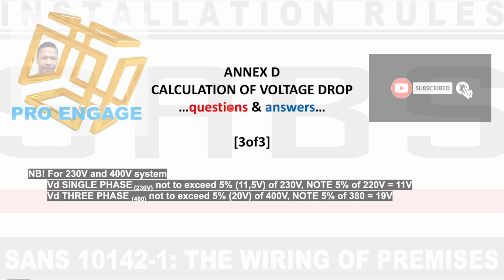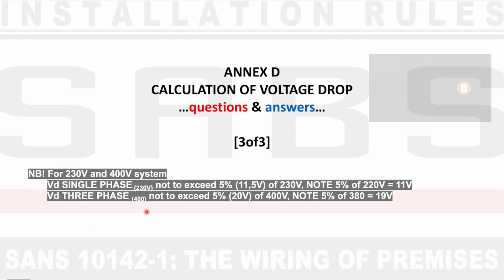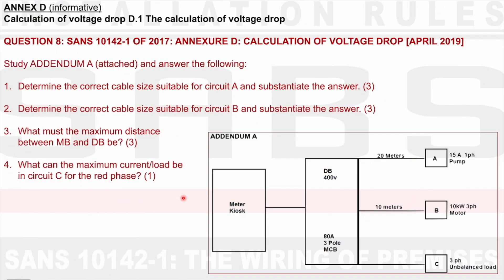Hi there, welcome to Annex D, Calculation of Voltage Drop. For single phase we use 230 volts and in three phase we use 400 volts. Now once again, 5% maximum allowable voltage drop of 230 volts is 11.5 volts and it would be 20 volts for 400 volts. For 380 it would be 19 volts and 220 volts it would be 11 volts.